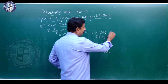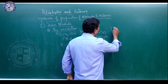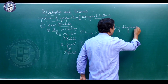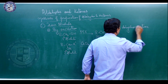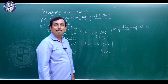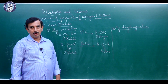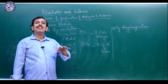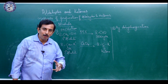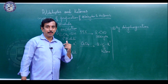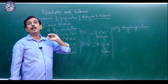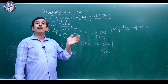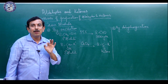The second method of preparation of aldehydes and ketones from alcohol is by dehydrogenation. Compared to oxidation, dehydrogenation is considered one of the easiest and best processes because the product obtained is in pure form. 'De' means removal, so dehydrogenation means removal of hydrogen from an alcohol to get the corresponding aldehyde or ketone.